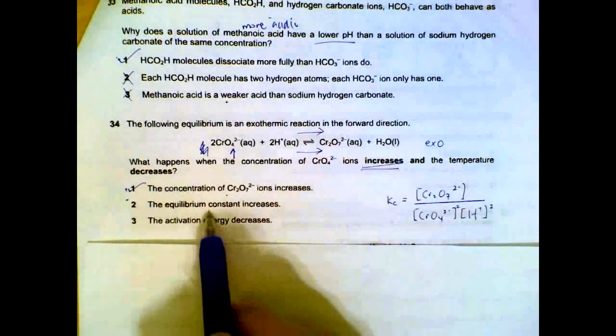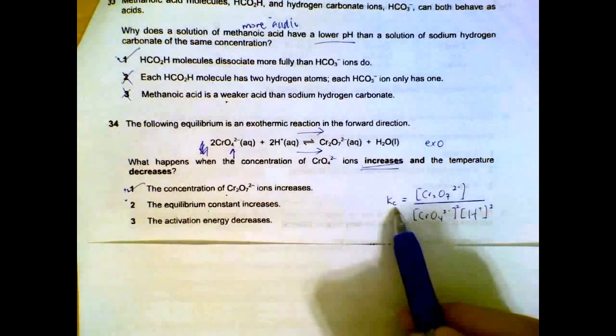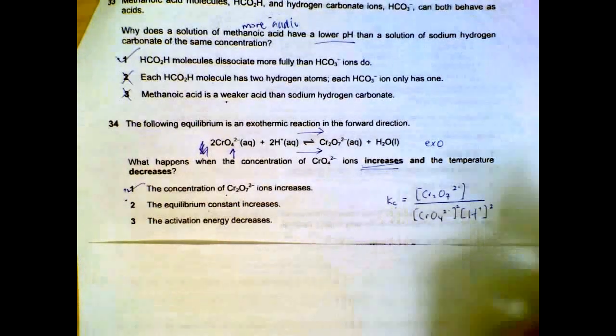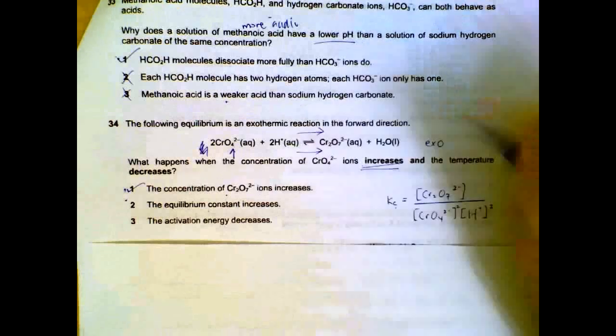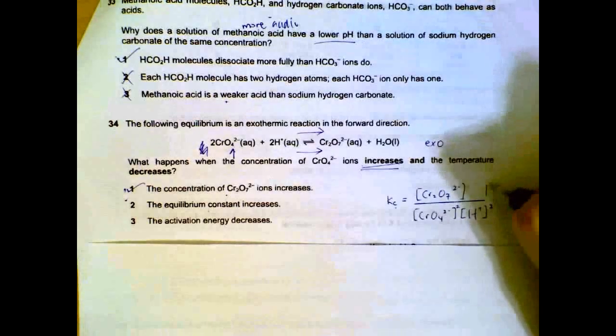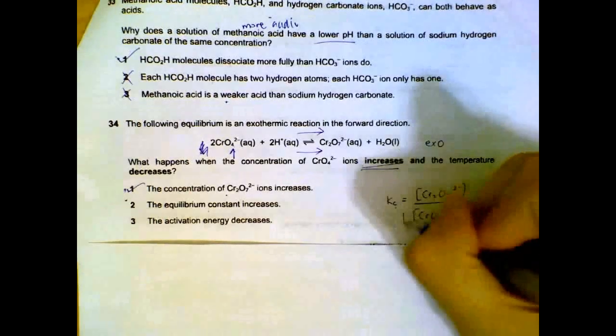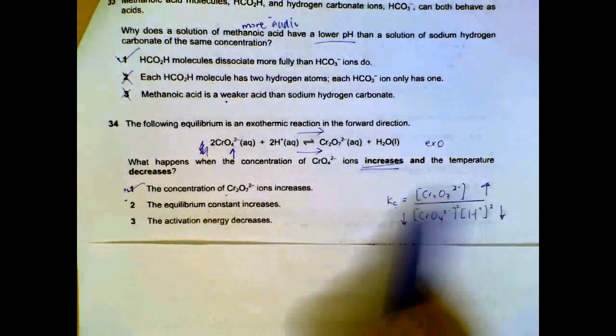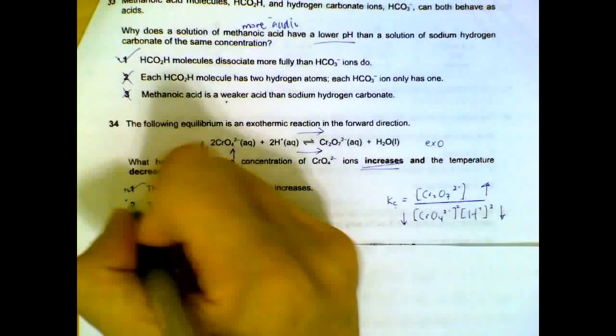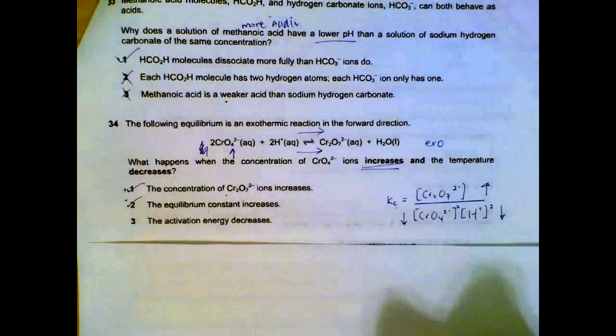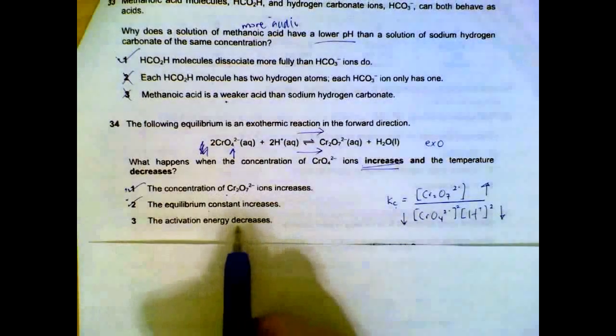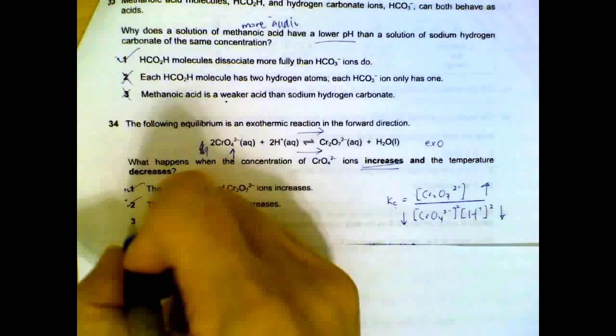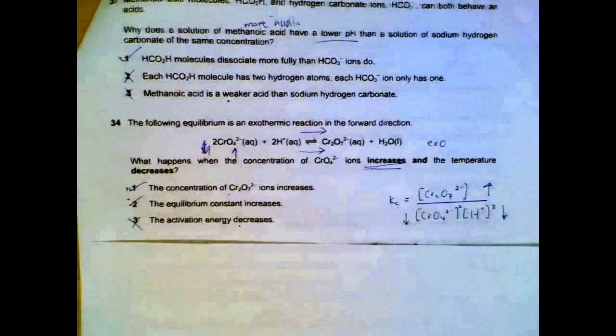Equilibrium constant is affected by a change in temperature. If you look at the equilibrium constant, we know that it shifts to the right, so it increases for the product, decreases for the reactants. The equilibrium constant will be increasing. Activation energy decreases. That will only be if there's a catalyst. So only statements 1 and 2 are correct.